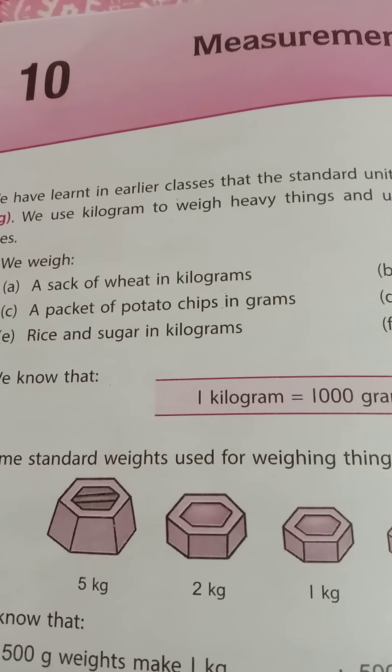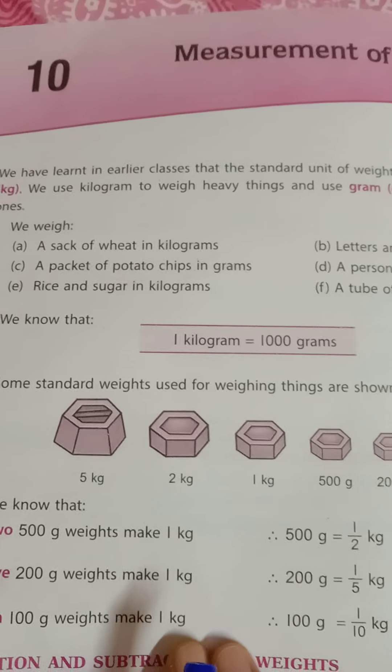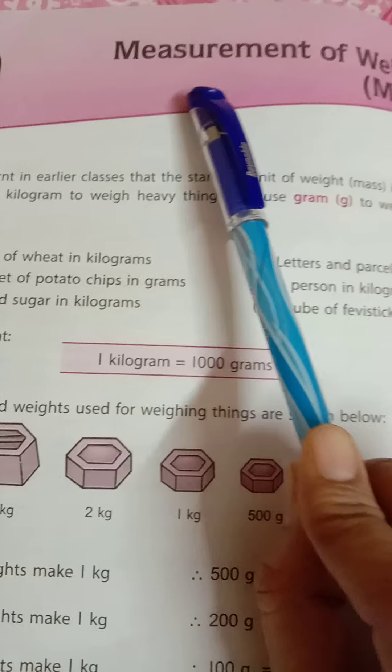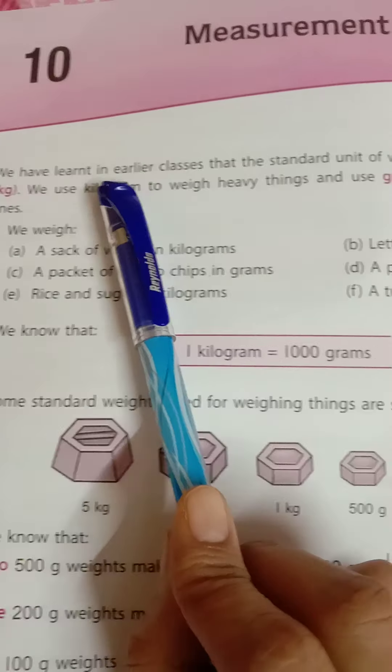Good morning students, welcome to your maths class. Today we are going to start the new chapter from your maths textbook — Chapter 10: Measurement of Weight. Here we will learn about the measurement of weight. The standard unit of weight is kilogram, abbreviated as kg. We use kilograms to weigh heavy things and grams to weigh lighter things. We write g in short form and kg in short form.